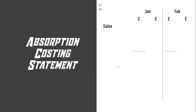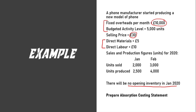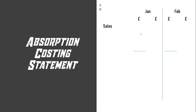Now we can prepare the absorption costing statement, starting with sales. To calculate sales we use the selling price of £30 times the sales units. So for January: £30 times 2,000 units equals £60,000, and for February it gives us £90,000.